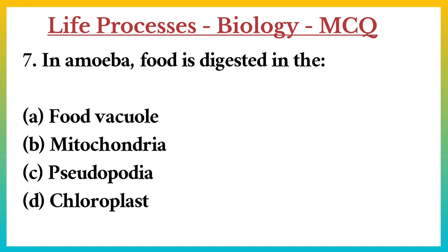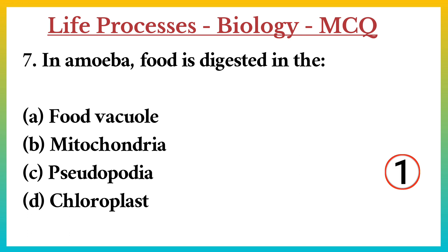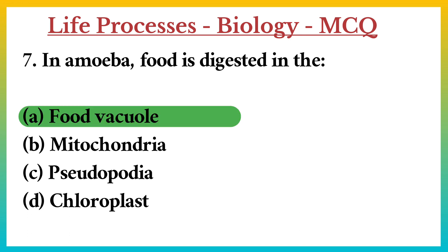Question number 7. In amoeba, food is digested in the: A. Food vacuole. B. Mitochondria. C. Pseudopodia. D. Chloroplast. Answer: A. Food vacuole.